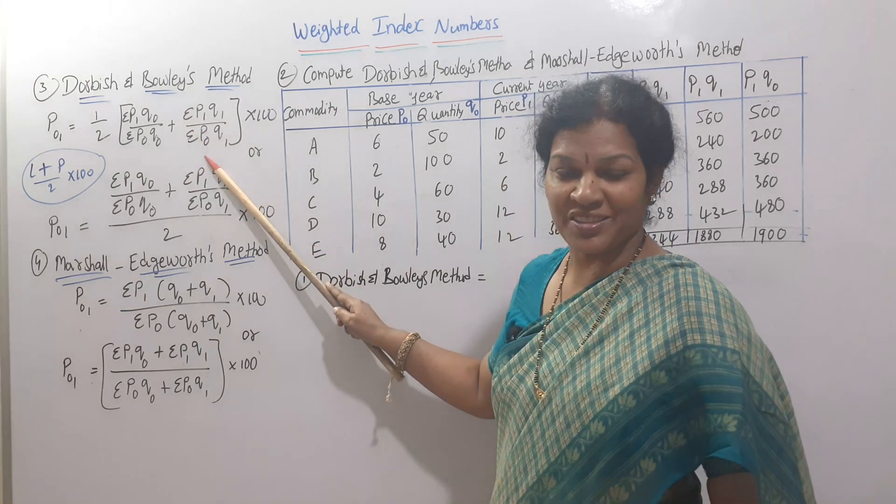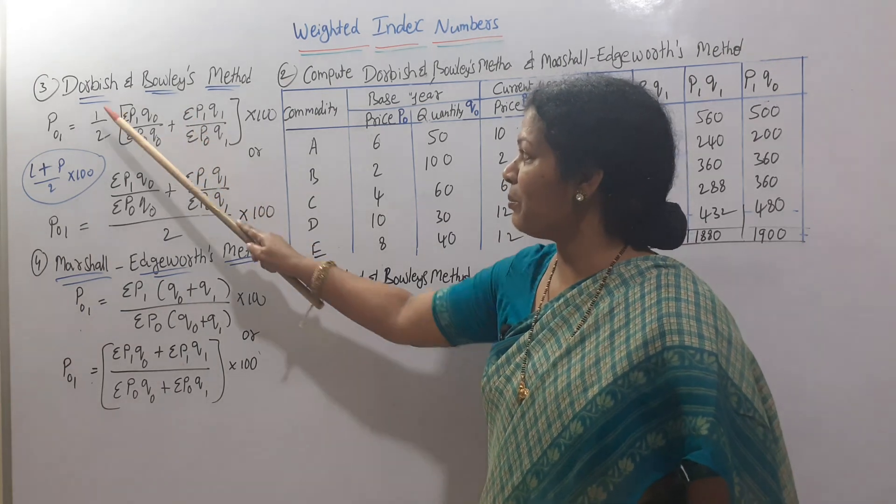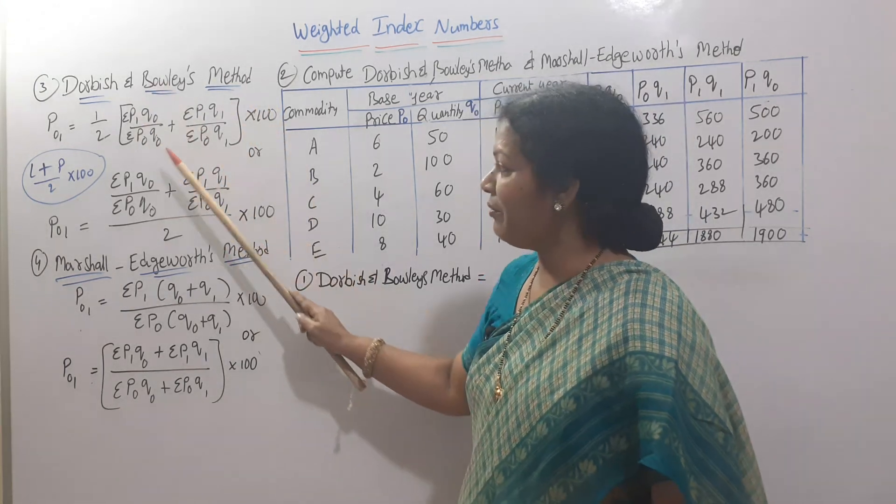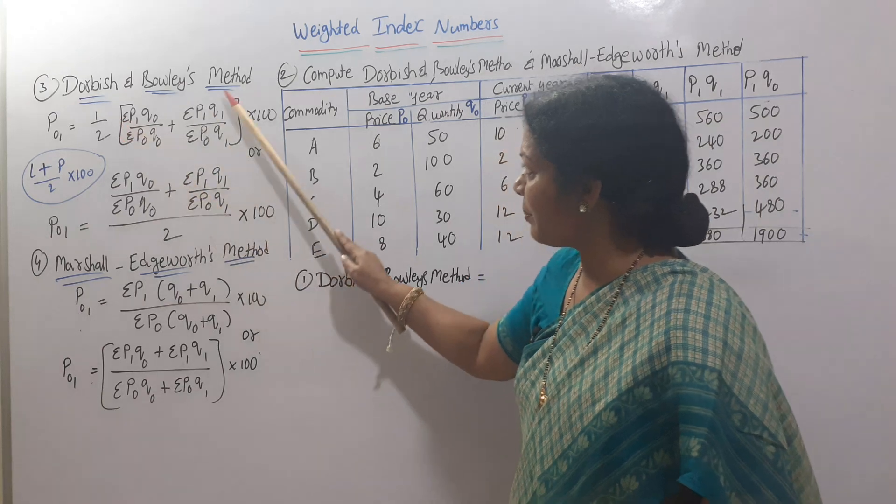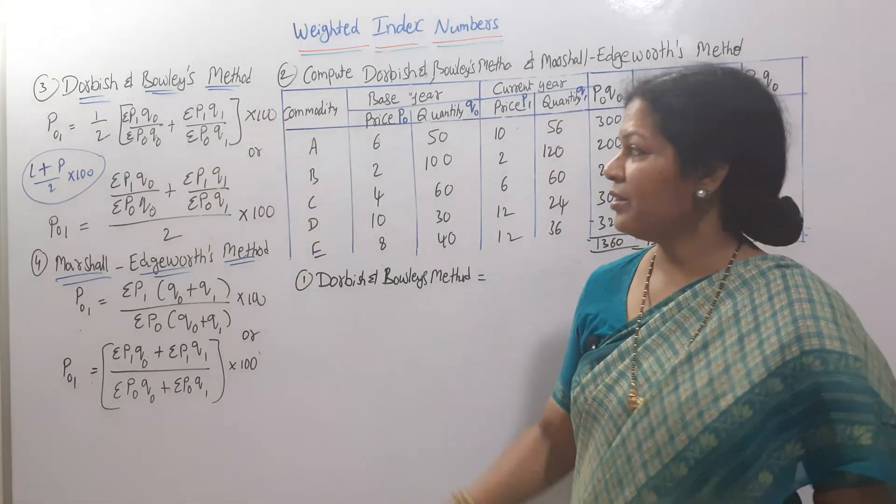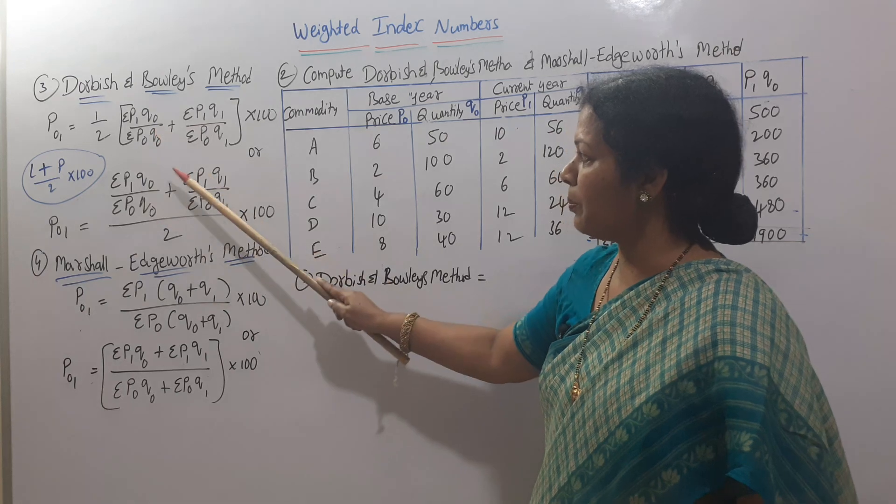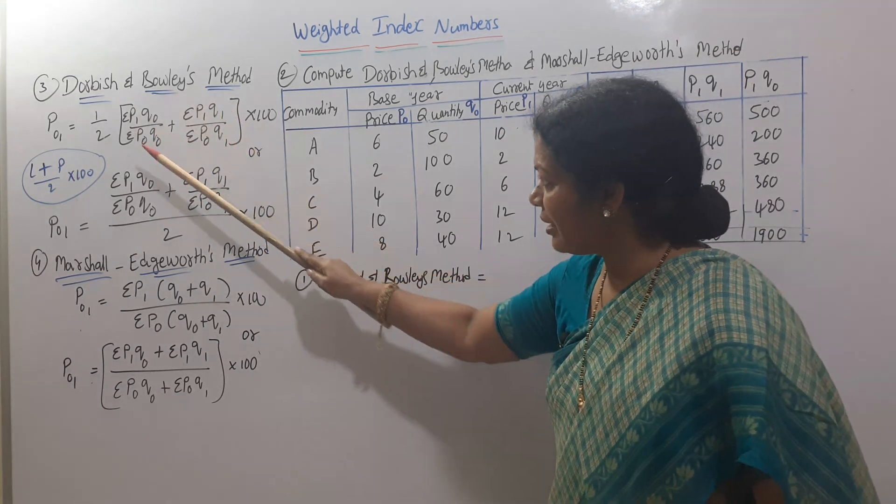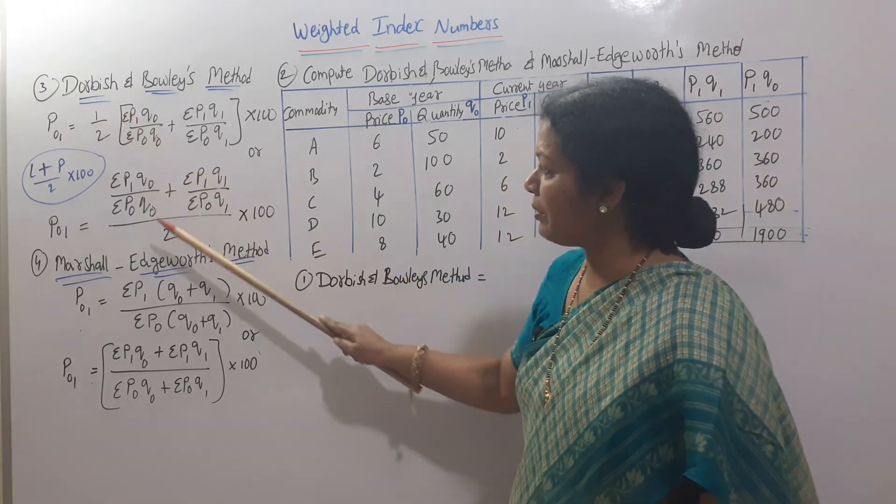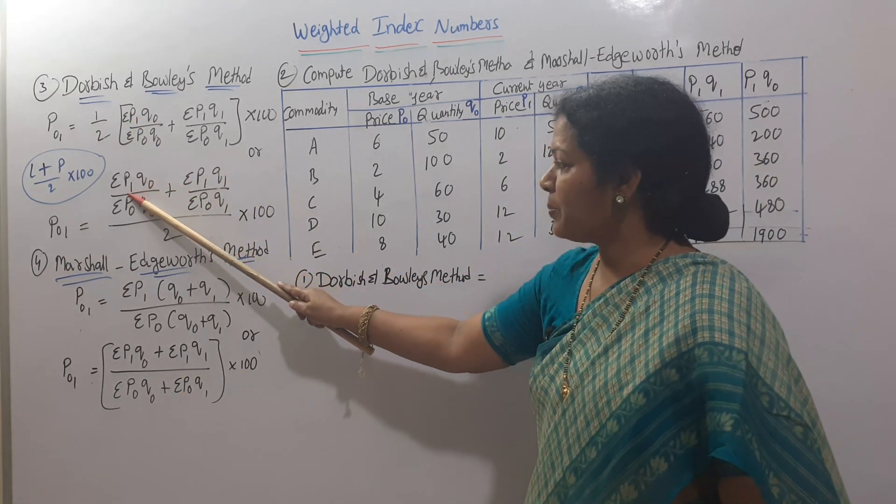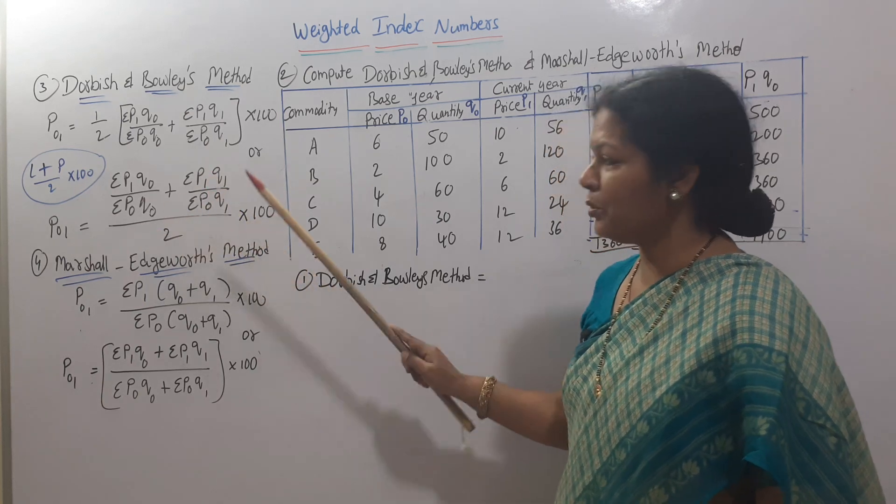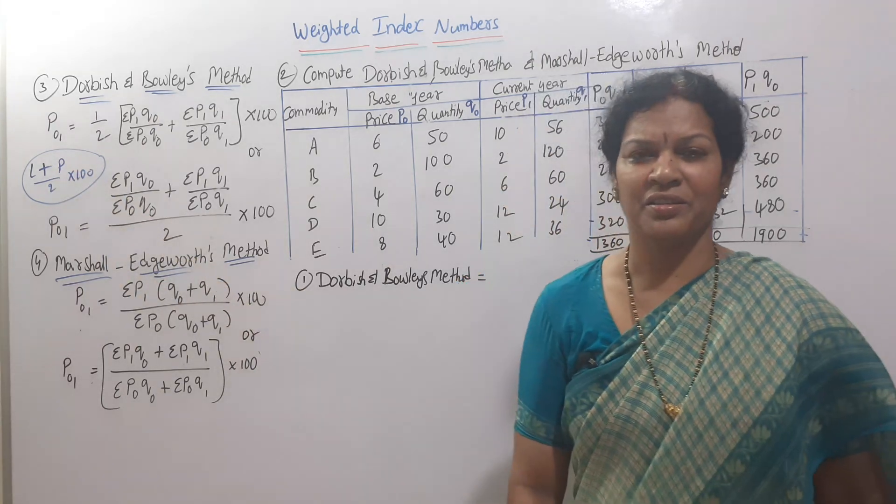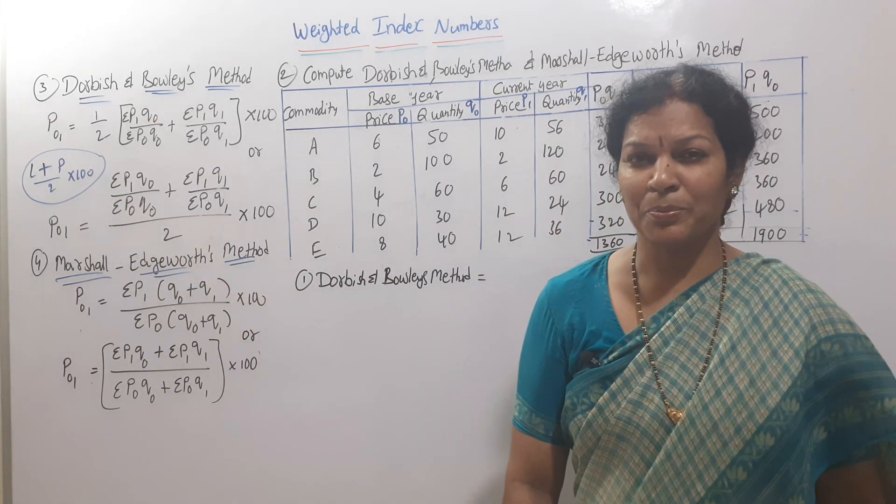We can write the same formula like this also: Sigma P1Q0 / Sigma P0Q0 plus Sigma P1Q1 / Sigma P0Q1, with 2 taken to the denominator. So Laspeyres plus Paasche divided by 2 times 100.